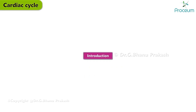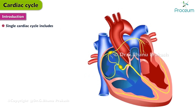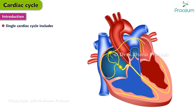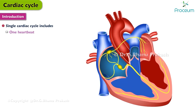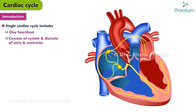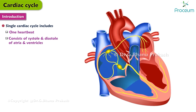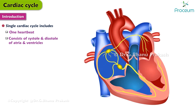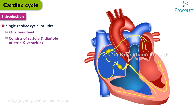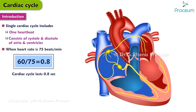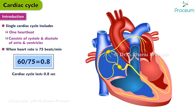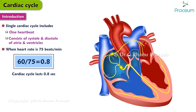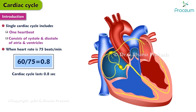Cardiac cycle — Introduction. A single cardiac cycle includes all the events associated with one heartbeat and consists of systole and diastole of the atria plus the systole and diastole of the ventricles. When the heart rate is about 75 beats a minute, the cardiac cycle lasts about 0.8 seconds.